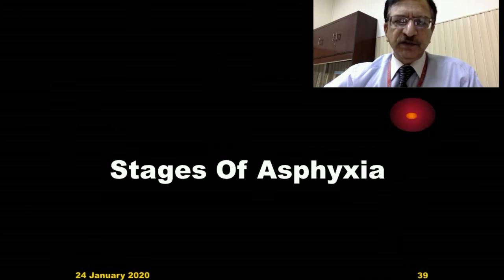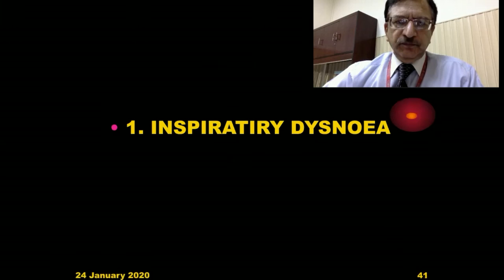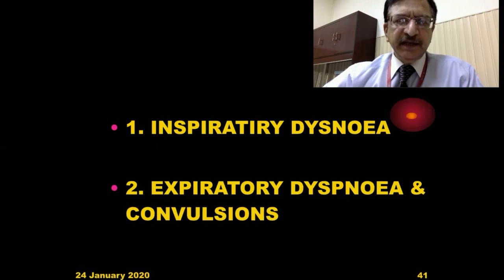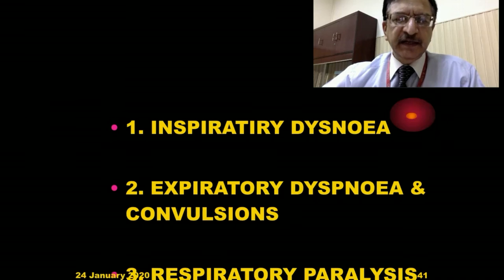The three stages or three phases of asphyxia with altered physiology are: first, inspiratory dyspnea — the efforts to breathe in, because there is deficient oxygen and the system tries to breathe in more to overcome asphyxia. Second, expiratory dyspnea — when there is accumulation of metabolites like carbon dioxide, the efforts to breathe out to get rid of these metabolites. Third and finally, respiratory paralysis — paralysis of the respiratory center in the brainstem.